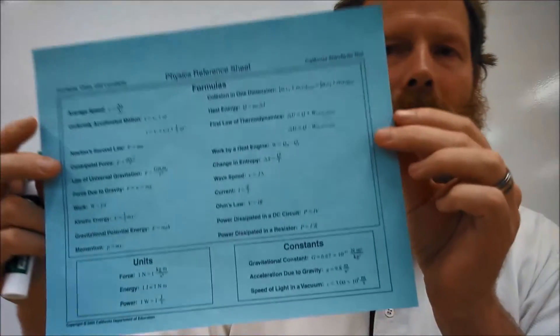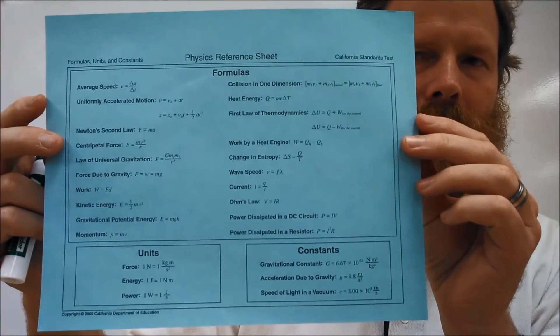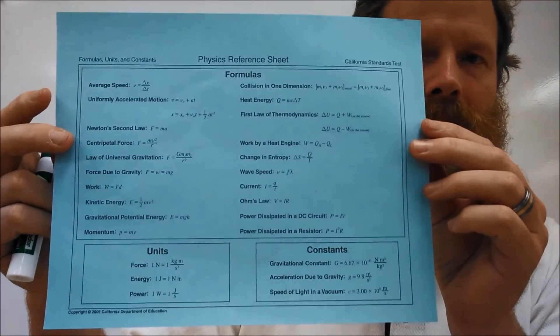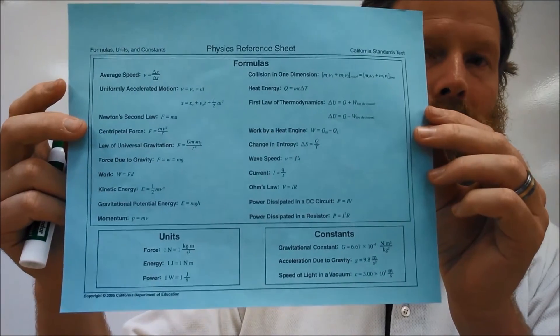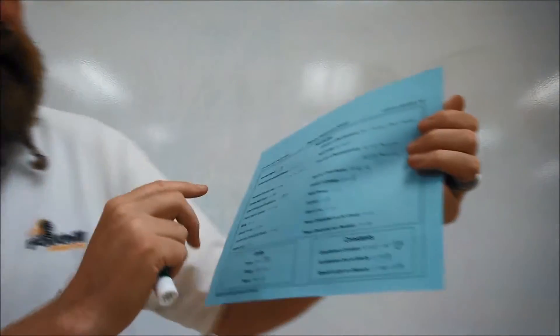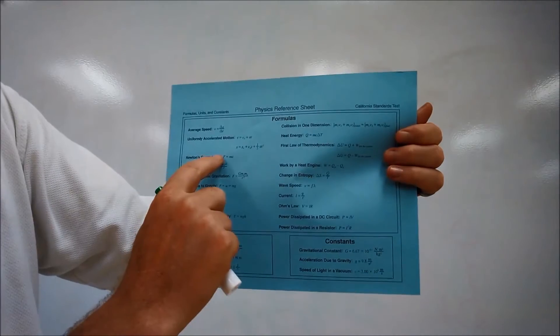But step two is to write down the equation. So once you know I'm using F, I'm using M, and I'm trying to find A, well then you can take a look at your equation sheet that we looked at in the last episode, and you can find an equation that has capital F, lowercase m, and lowercase a. And lo and behold, here it is, Newton's second law, F equals ma.